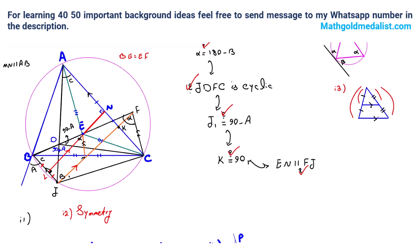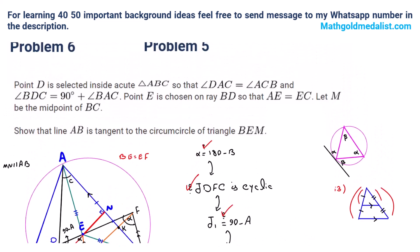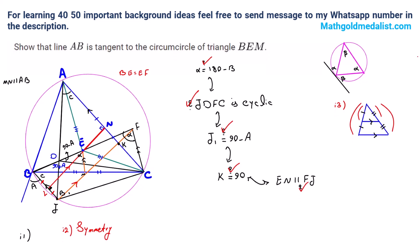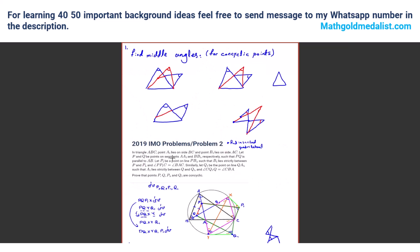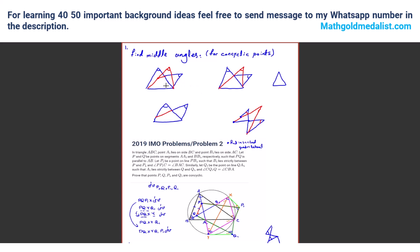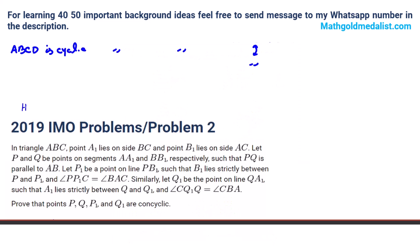If you had any questions about this problem or want to solve more similar problems, feel free to send a message to my WhatsApp number in the description. There are many ideas in geometry — one of them is how to create equal angles to find cyclic quadrilaterals, like in this problem. Try IMO 2019 Problem 2 as homework. If you want to learn more ideas or solve more problems, feel free to message me.